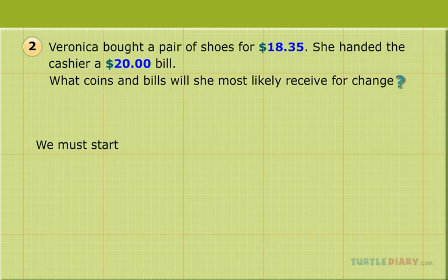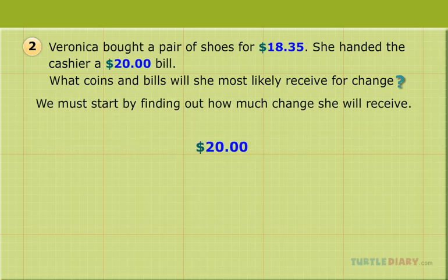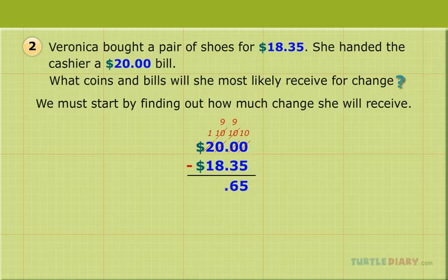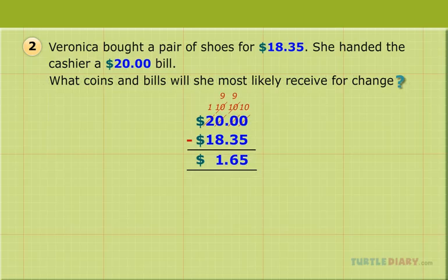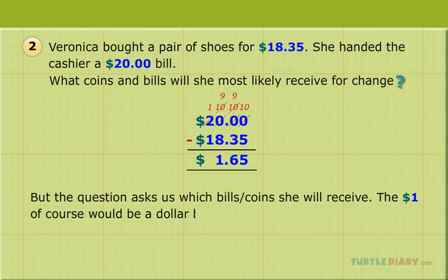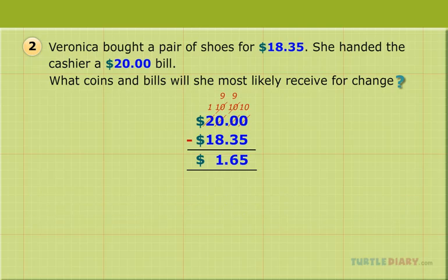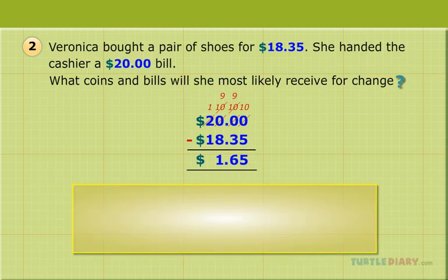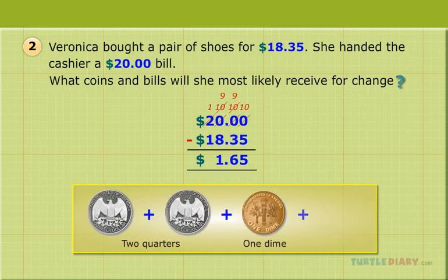We must start by finding out how much change she will receive. Line up the decimals and subtract. The question asks us which bills and coins she will receive. The $1.00 would be a dollar bill. But what about the $0.65? Cashiers typically give back the fewest coins possible, so the cashier would give two quarters, a dime, and a nickel.